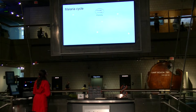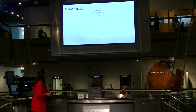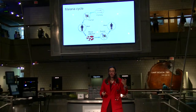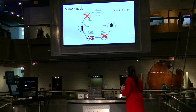Malaria is caused by a parasite — not a bacteria or virus, but a small organism. Once that parasite is inside a mosquito, the mosquito can bite a human and transmit it, causing a blood infection. When another mosquito bites that person, it can pick up the parasite, bite another person and transmit it — and so on. This is the malaria cycle, and there are a lot of different places in this cycle where they can try to stop it.